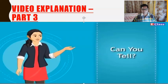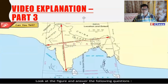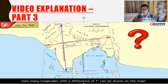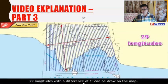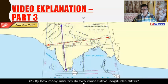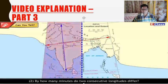Look at the figure and answer the following questions considering the longitudinal extent of India: How many longitudes with a difference of one degree can be drawn on the map? Answer: 29 longitudes with a difference of one degree can be drawn on the map. By how many minutes do two consecutive longitudes differ?